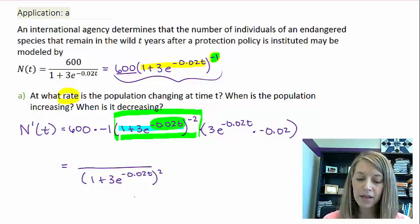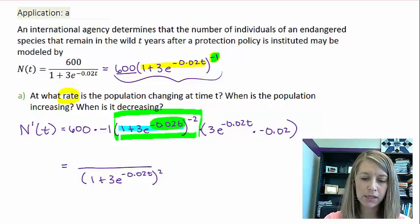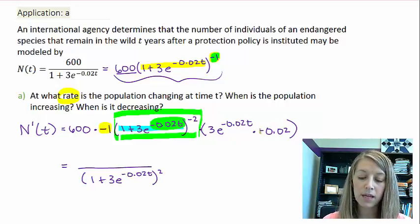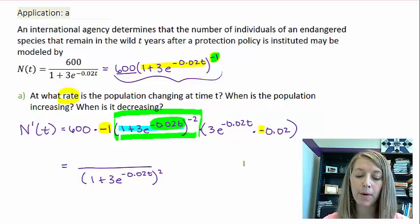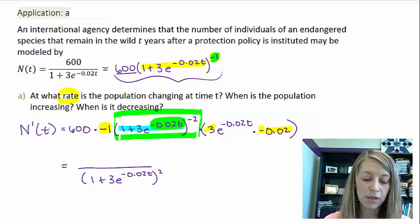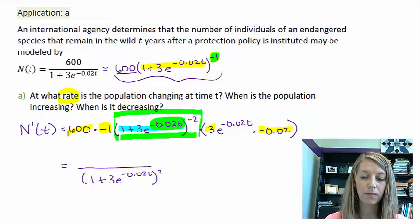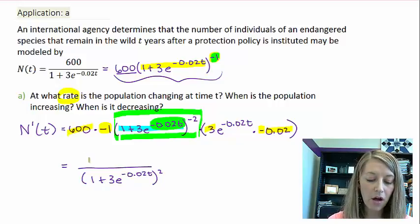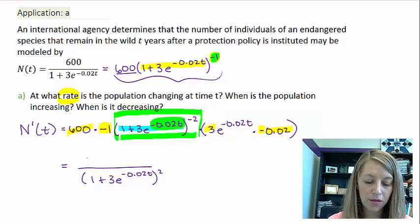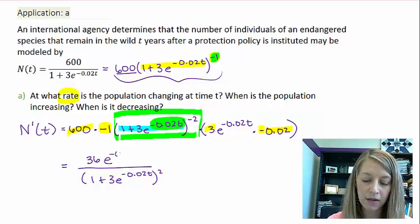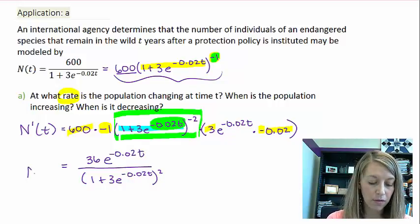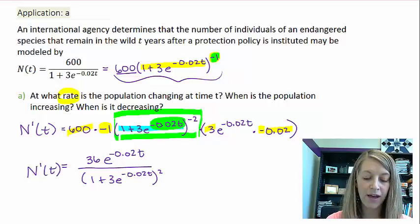And then everything else is in the numerator. So let's see if I can multiply all of this. I have a negative 1 times a negative 0.02. So I know my answer is going to be positive. So I have 0.02 times 3 times 600. And so that all gives me a 36. And then, of course, I still have this e to the negative 0.02t. So there is our simplified derivative.